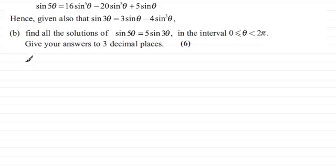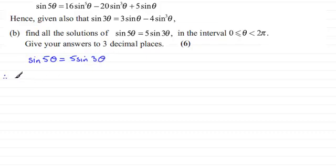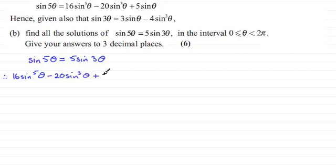Let's copy down the equation we're given: sin5θ = 5sin3θ. We'll take the identities built up for each of these and equate them. For sin5θ we have 16sin⁵θ minus 20sin³θ plus 5sinθ.